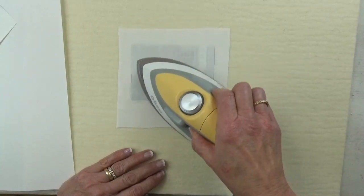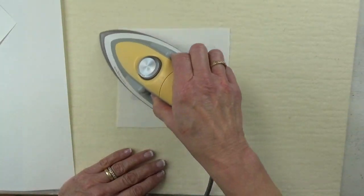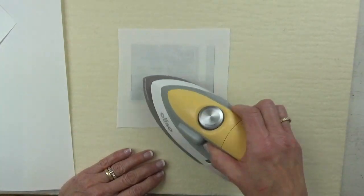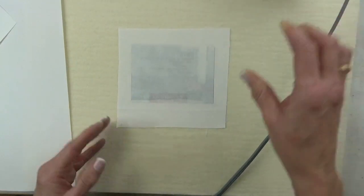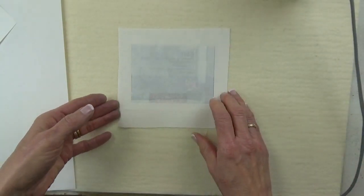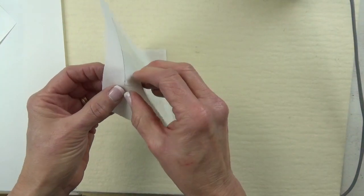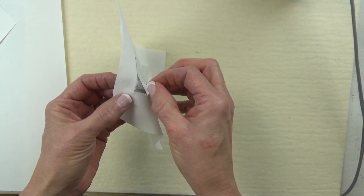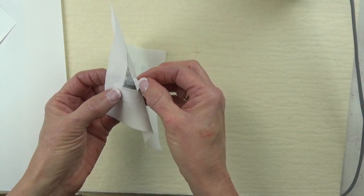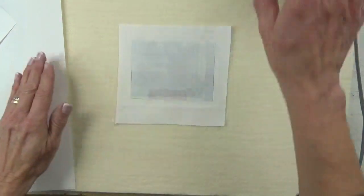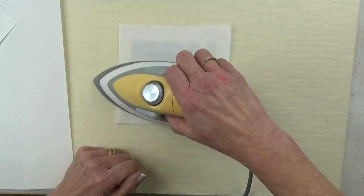Okay, it's been about two minutes, so I'm going to stop ironing. The instructions say that this can be peeled hot or cold. So I'm going to test it. Nope, it's not ready yet. Back to ironing.